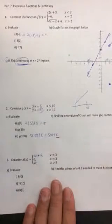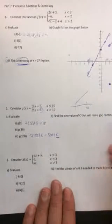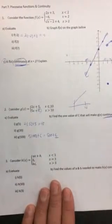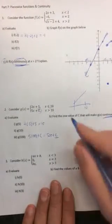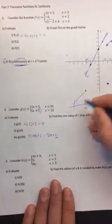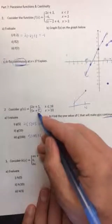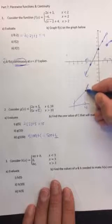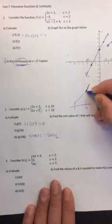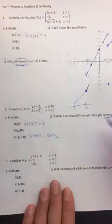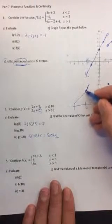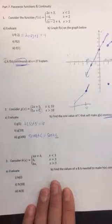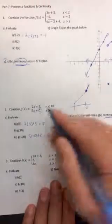And finally, it says, find the one value of C that will make g of x continuous, there's that word again, at x equals 10. So the idea is, there's this linear function here, and there's this other linear function that has a different y-intercept, and we want it to be continuous. And in order for it to be continuous, there needs to not be a break here. And in order for there not to be a break, the two y values should be the same at x equals 10.